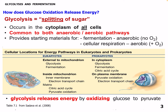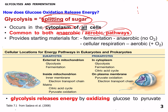So first we'll talk about glycolysis briefly. Glycolysis is essentially the splitting of a sugar. Glycolysis occurs in the cytoplasm of all cells. Glycolysis is common to both anaerobic and aerobic pathways. As we move down that chain, we have glycolysis, and then after glycolysis we have the decision of aerobic or anaerobic — all cells go through this. Glycolysis provides the starting materials for the fermentation reaction in anaerobic pathways and cellular respiration in aerobic pathways.